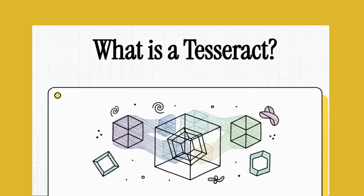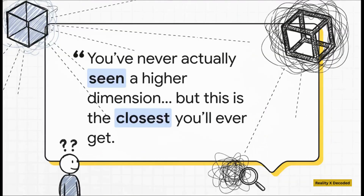We are about to explore one of the most mind-bending concepts out there. We're talking about a shape that technically can't even exist in our three-dimensional world. But here's the crazy part — we can still see its shadow. Just let that sink in for a moment.